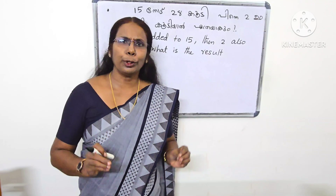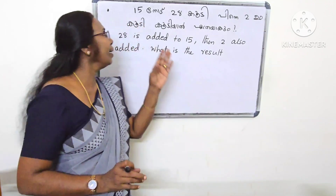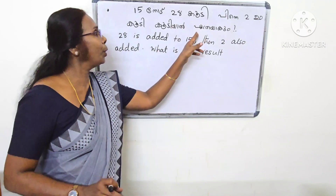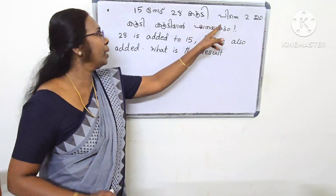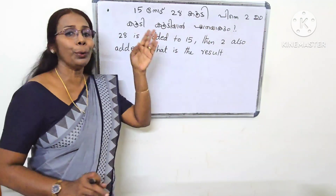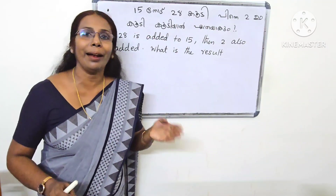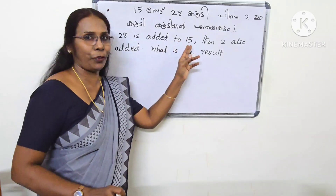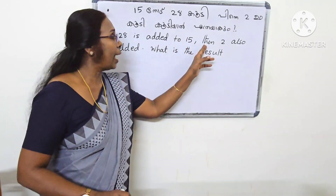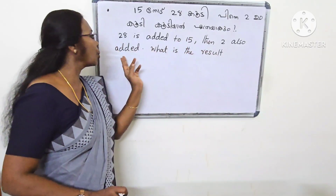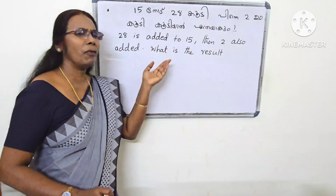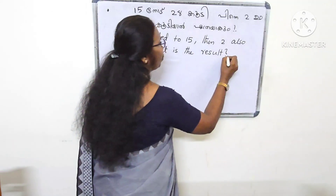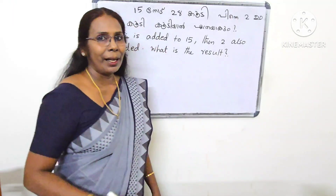Now, what is the result? 28 is added to 50. Then, 2 is also added. What is the result? This is the result.